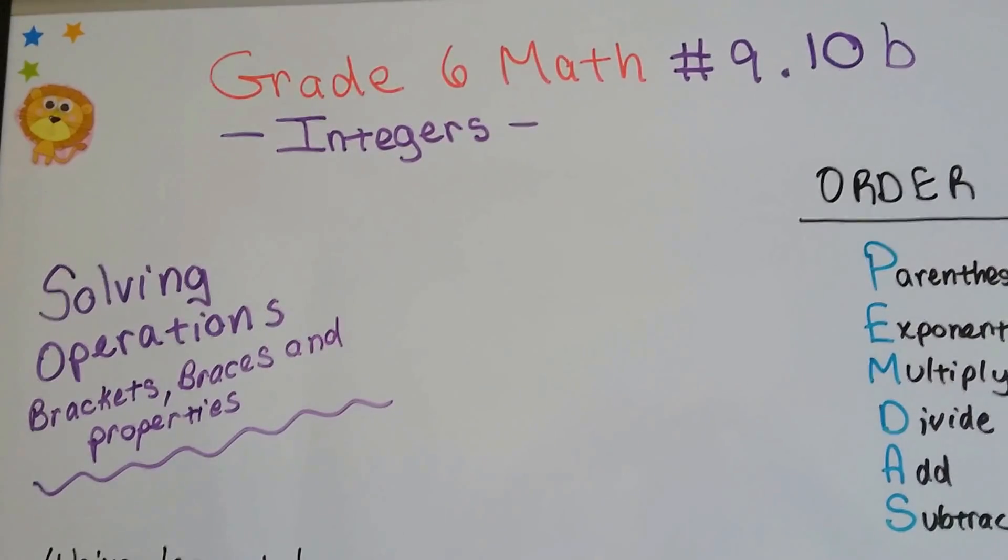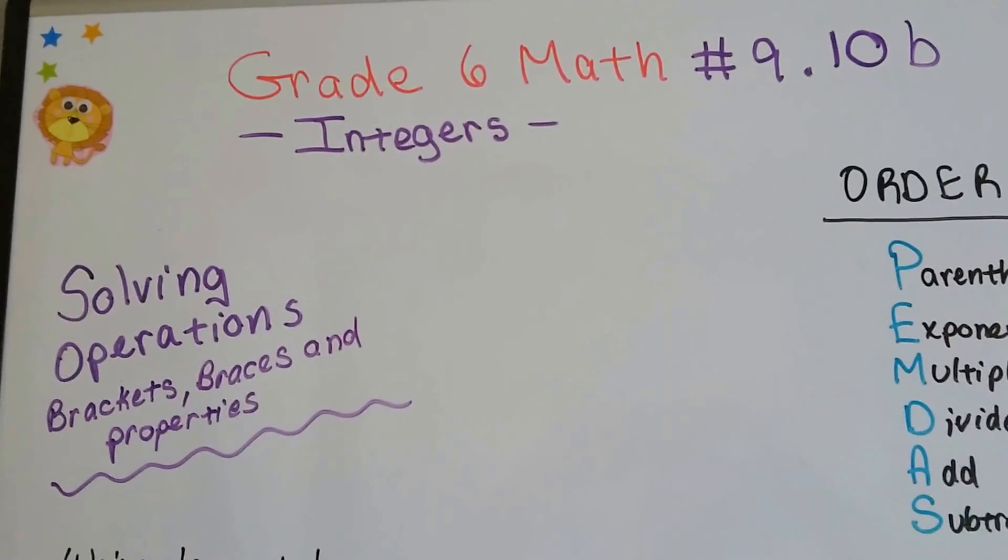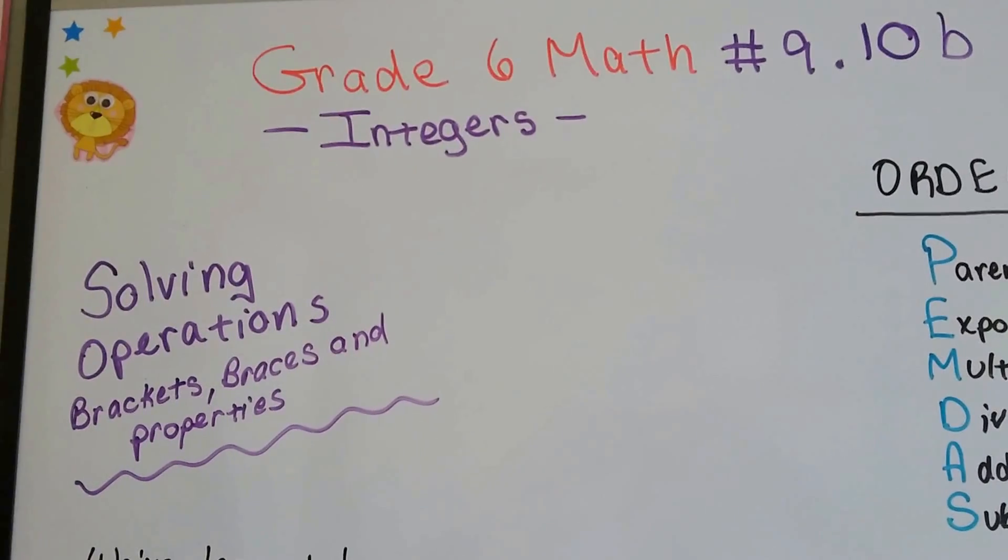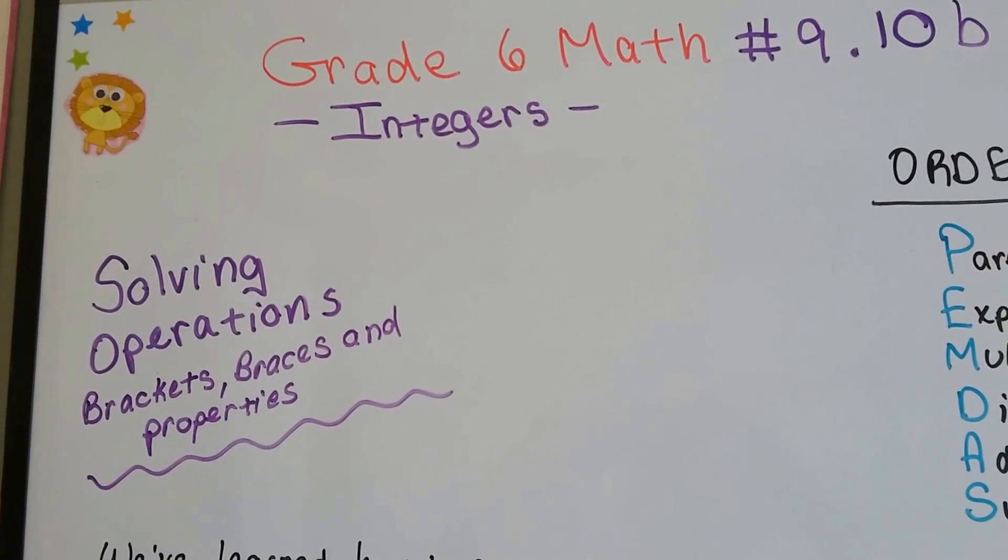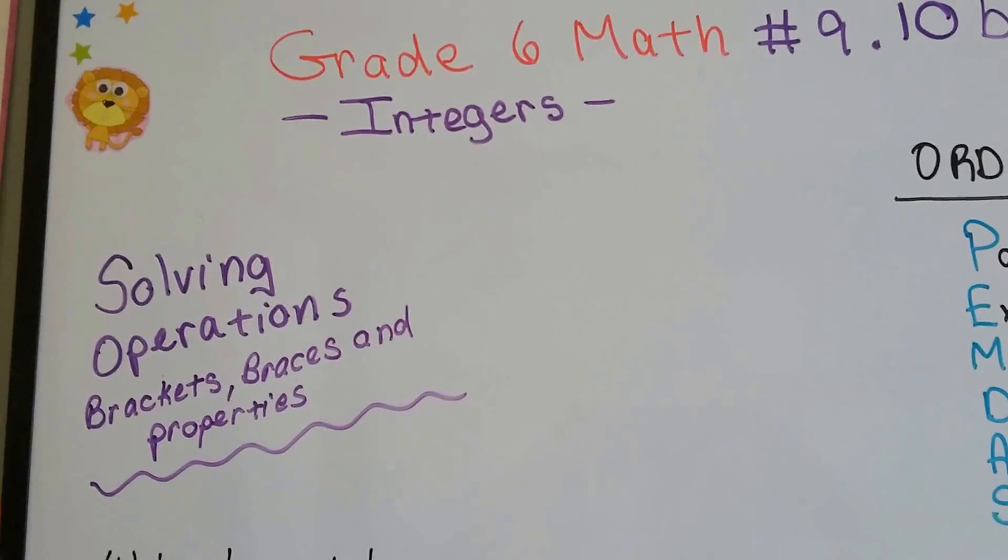Grade 6 math number 9.10b. This is part 2. There was an A. We're solving operations and we're using brackets, braces, and properties.